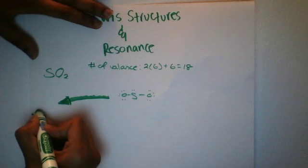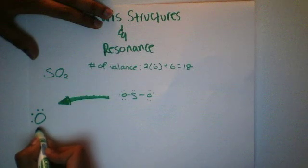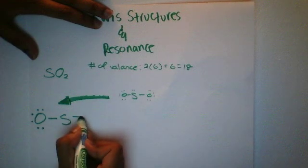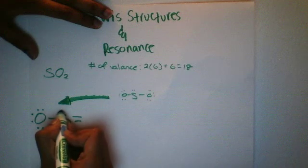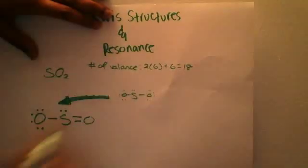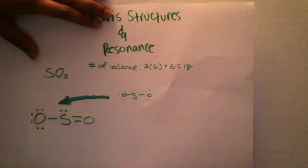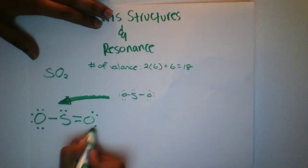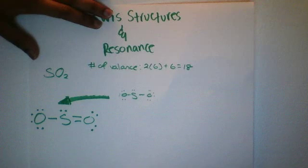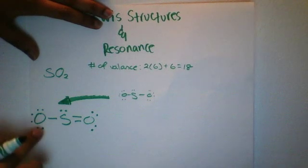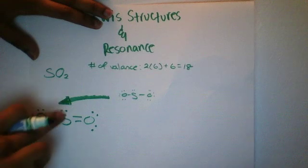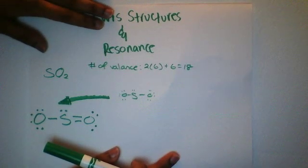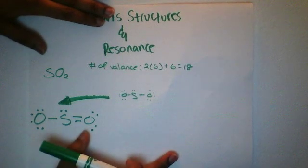Let's make this bigger so we can see it. So that looks good, there's 2, 4, 6, 8, 10, 12, 14, 16, 18. Looks like we have 18 electrons there, but this is only one of the structures.